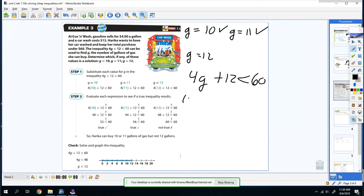So now you plug in the 12. So you're going to do 4 times 12 plus 12 is less than 60. So 4 times 12 is 48. 48 plus 12 is 60. Well, we got the same numbers. But the problem is this is not true. 60 is not less than 60. So this is a false statement. So the only values that are true in this case are 10 and 11. So when you actually solve it, it would be g has to be less than 12.